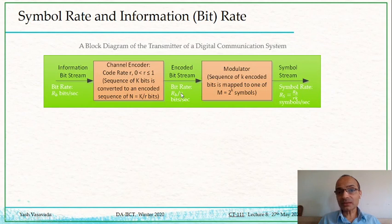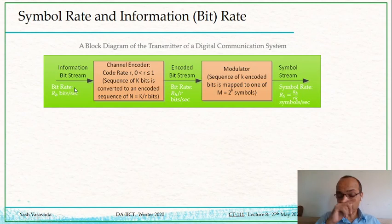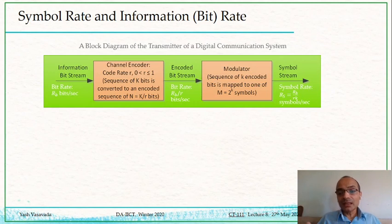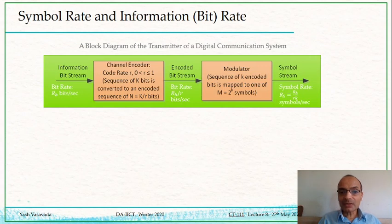Alternatively, the rate RB at the input to the encoder becomes RB divided by r at the output of the encoder. If r is very small, say r = 0.1, then the bit rate here will be 10 times the input bit rate, which makes sense because we increased the number of bits by a factor of 10. Those bits still have to be accommodated in the same one-second duration, so the encoded bit rate is RB divided by small r.